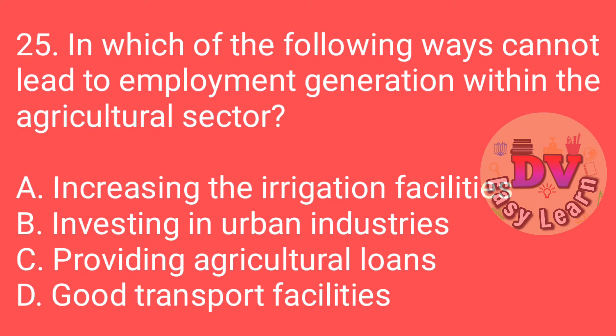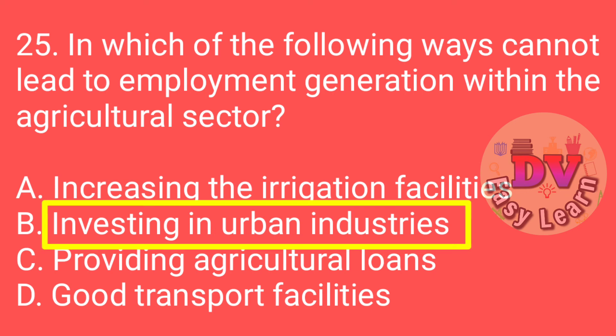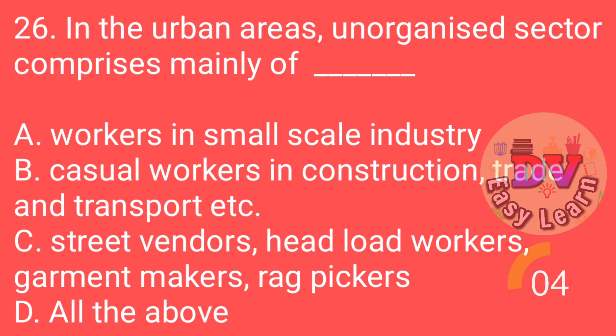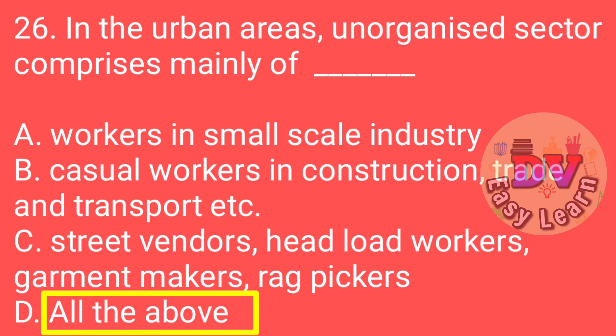Q25: In which of the following ways cannot lead to employment generation within the agriculture sector? Correct option: Investing in urban industries. Q26: In the urban areas, the unorganized sector comprises mainly of workers in small scale industries, casual workers in construction, trade and transport, street vendors, head load workers, garment makers, and rag pickers.